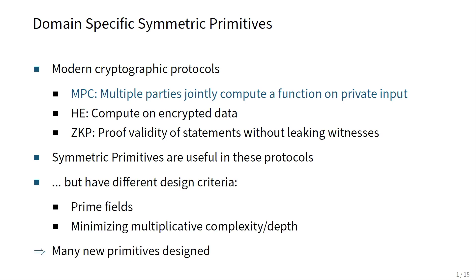However, we cannot really use traditional symmetric primitives like AES or SHA-3 because they were designed to be efficient in software and hardware. For these protocols, we have a completely different cost metric. In these protocols, we usually work over some larger prime fields, and symmetric designs should then also be defined over larger prime fields to be efficient. The cost in these protocols is usually related to the multiplications in the design, something for which traditional symmetric designs were not optimized.